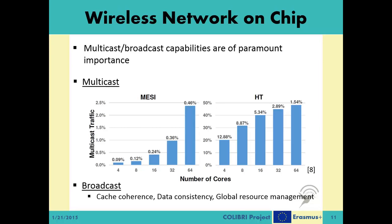A critical advantage of wireless systems over wired ones is the inherent multicast and broadcast capabilities, which are of paramount importance for wireless network-on-chip applications. For multicast, it is shown by Abadal et al. that the amount of ejected packets consistently increases due to the multiple replication of each multicast message within a wireless network-on-chip. This figure shows the percentage of ejected flits that are due to multicast transactions, which grows above 2% in the wireless network-on-chip system called MESI and almost reaches 50% in another system called HT. This further encourages the employment of shared-medium network-on-chips to efficiently serve multicast traffic. Broadcasting is also a vital part of on-chip traffic due to numerous issues like cache coherence, data consistency, and global resource management.